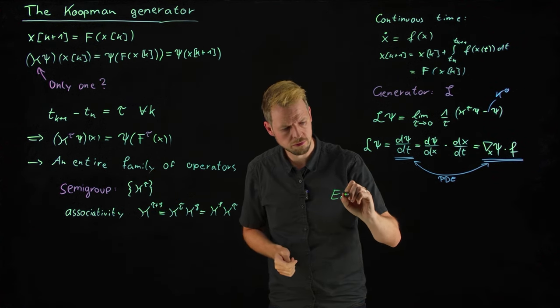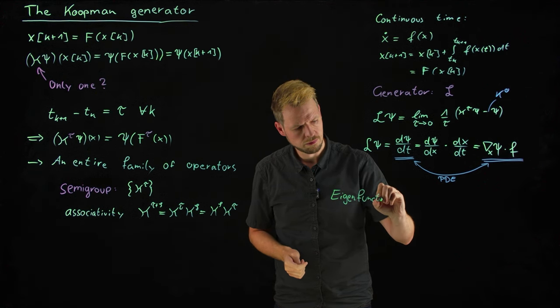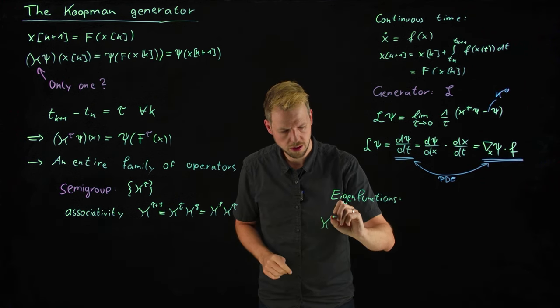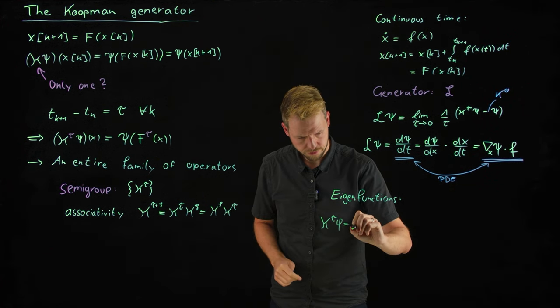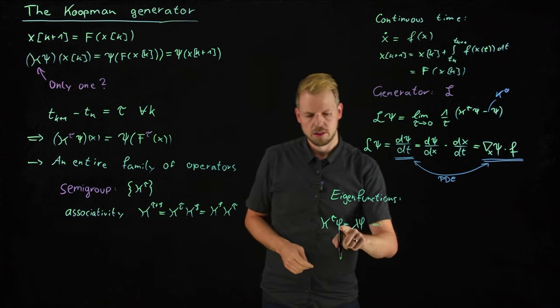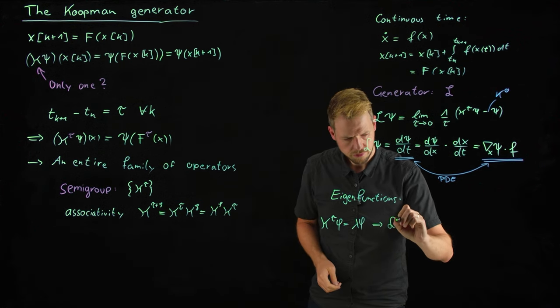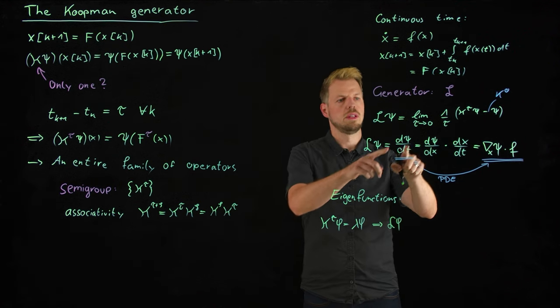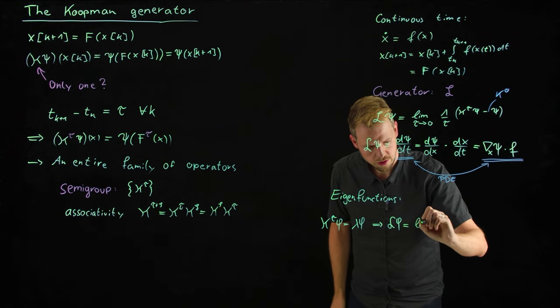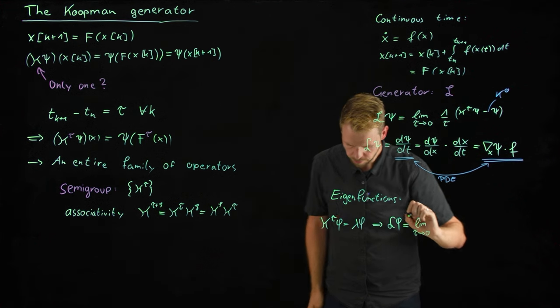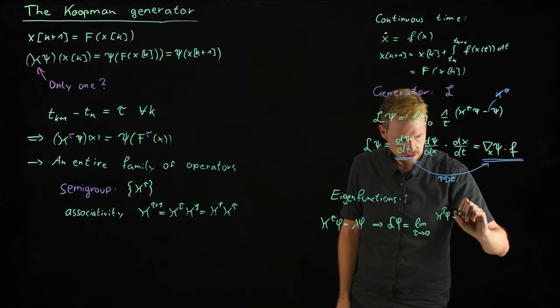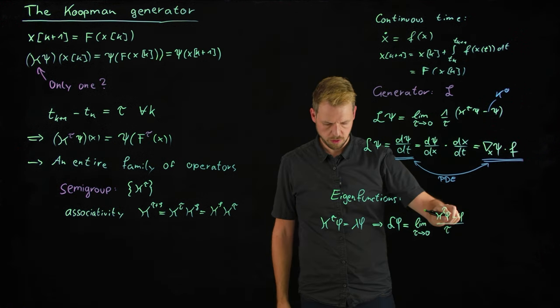We will study in the next video how to approximate it from data and how to use it for time series prediction. But for now, one concluding remark may be that we can also study this object and learn a lot about the Koopman operator. The spectrum is closely related, and quite naturally, as it generates this family, the information has to be contained already. So if we consider eigenfunctions now and start with the Koopman operator eigenfunction, which is defined as K phi equals lambda phi, where lambda is the Koopman eigenvalue.